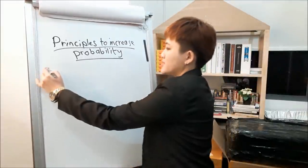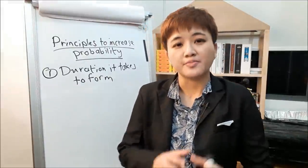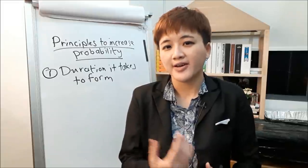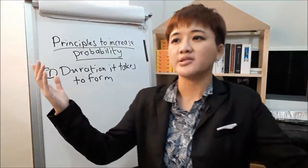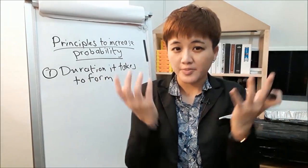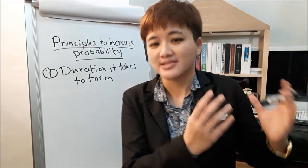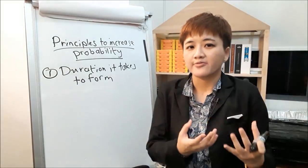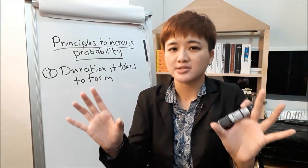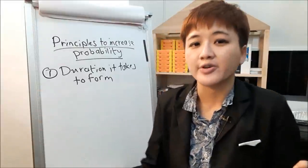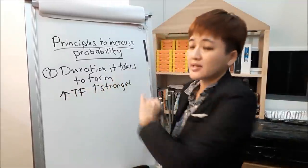The first thing that increases probability is the duration it takes to form — how long did it take to build the chart pattern. If you take five minutes to build a building it might impress clients, but tomorrow it'll collapse. The more time you put in to build it, the stronger it will be. Same thing for chart patterns. For example, heads and shoulders — if you see it on a one-hour time frame versus the monthly time frame, the one on the monthly time frame is going to work out better, because the higher the time frame the stronger the signal.